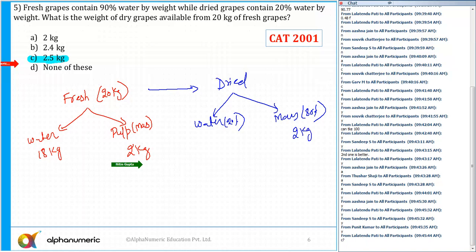So 80% is equal to 2 kg. 80% is equal to 2 kg. So 20% is equal to 0.5 kg. Yes or no? 80% is 2 kg.